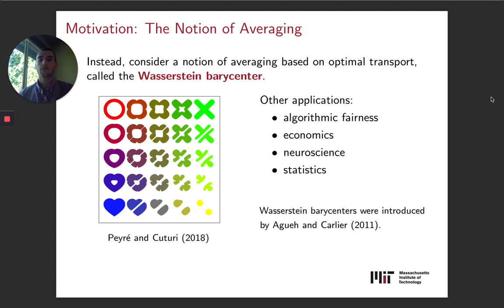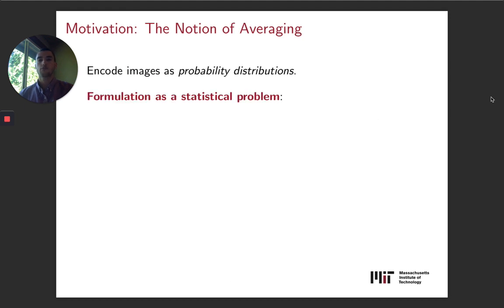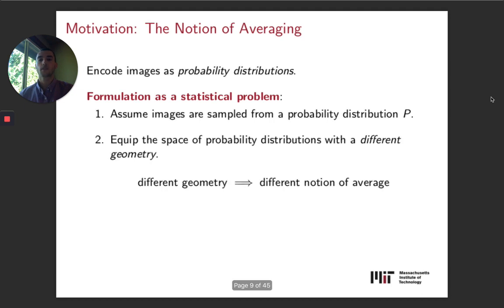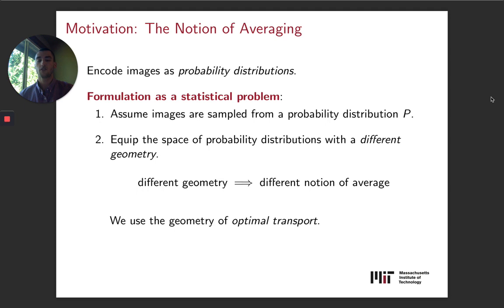which considered a notion of averaging based on optimal transport called Wasserstein barycenters, or Optimal Transport barycenters. The remarkable thing is that it's possible to do much more geometrically meaningful averages of complex data, such as images, as you can see in this photo, and it has other applications.